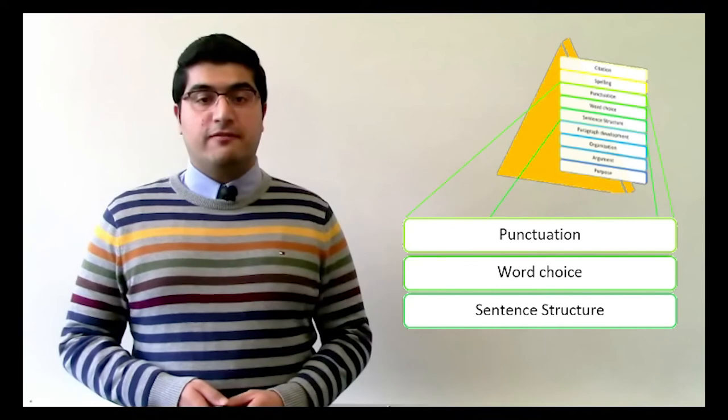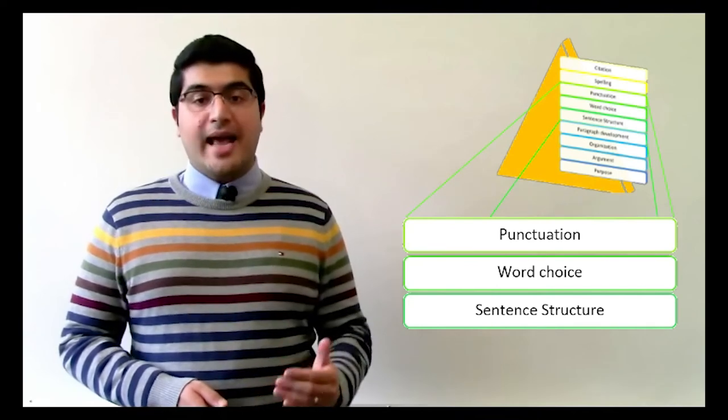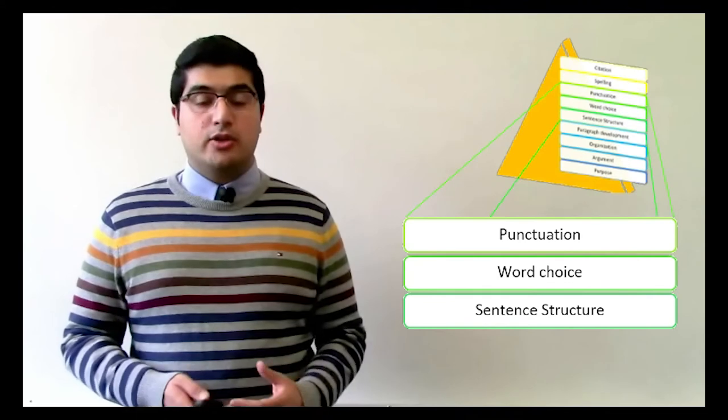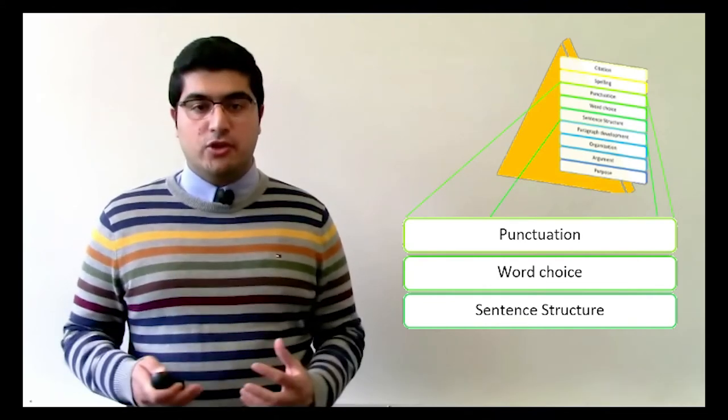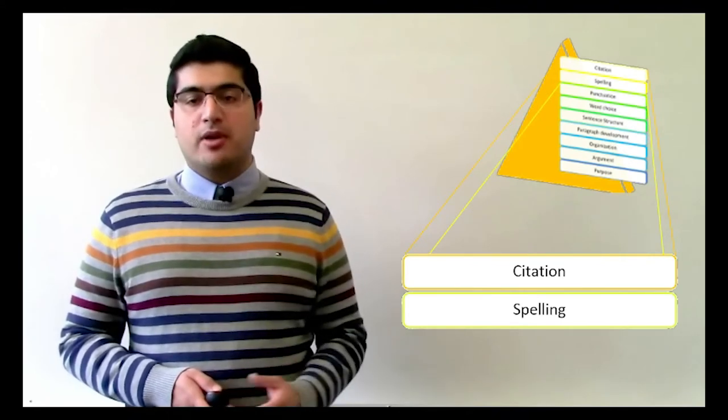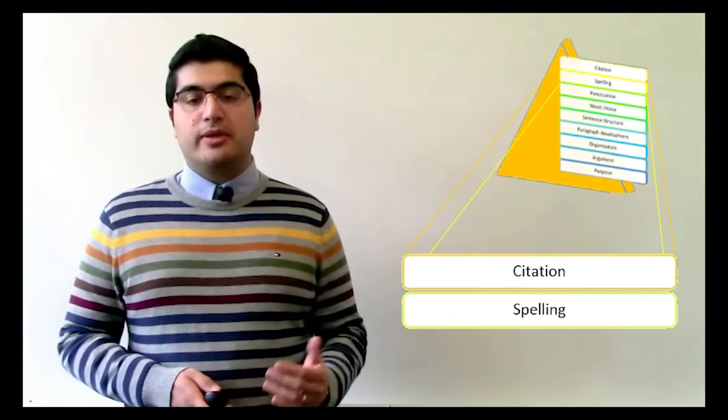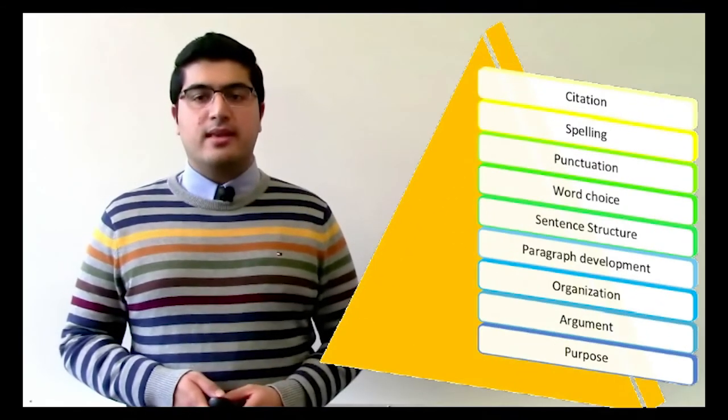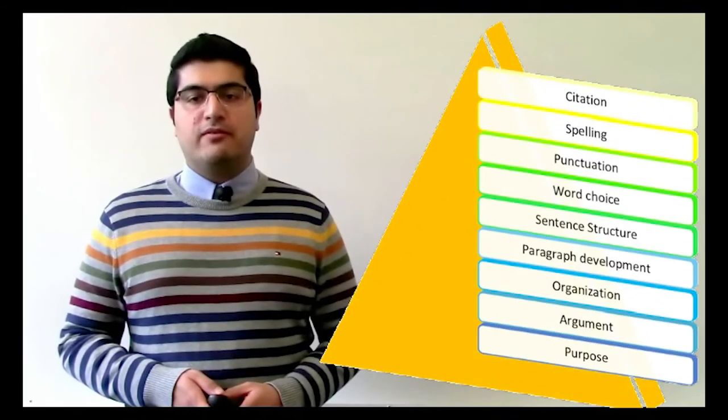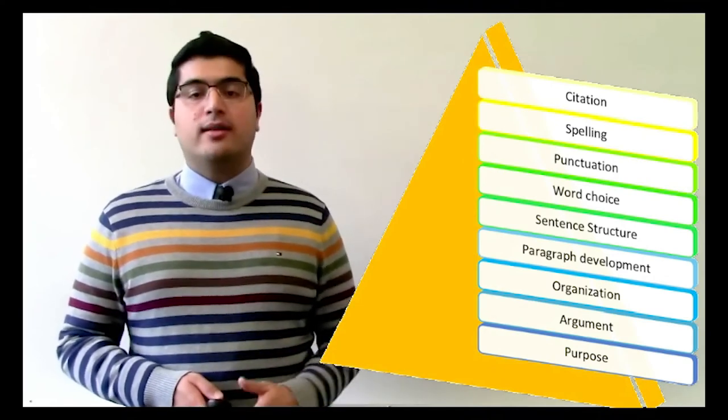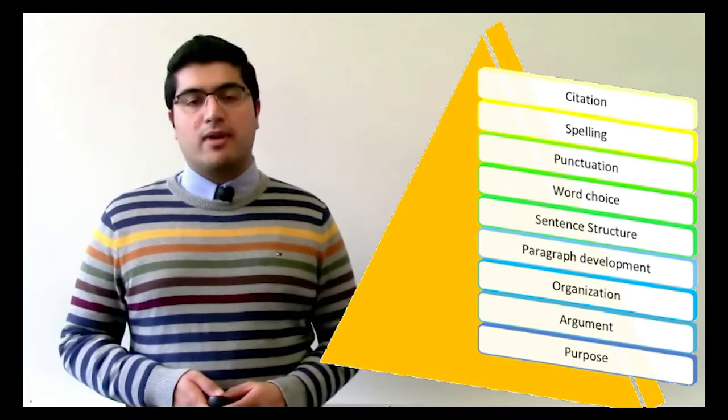Once you're done with this middle phase, you can begin the third and last stage of editing your paper. Now you have a draft that is solid in terms of arguments, organization, and the mechanics of the sentences. The only thing left is to proofread for typos, spelling errors, and to put in your in-text citations. You can ask a friend or a CAC tutor to read over your paper to give you feedback, but hopefully, with your multi-layered editing, you must have caught the most important errors in your own writing.